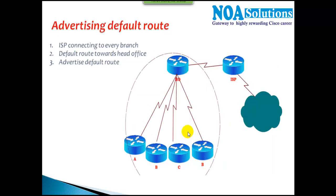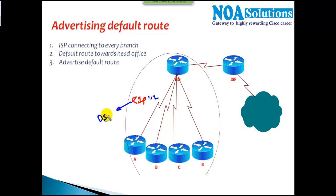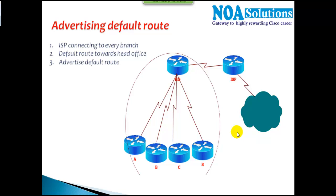In the next scenarios we'll get into practical labs. We'll start with RIP version 2 to see how to advertise the default route. Later labs will cover OSPF and EIGRP. In the labs I won't connect to a real internet network, but I'll assume some networks to represent internet routes and verify everything practically.